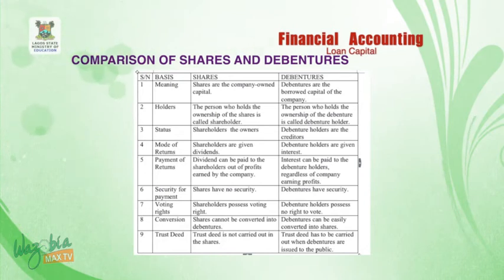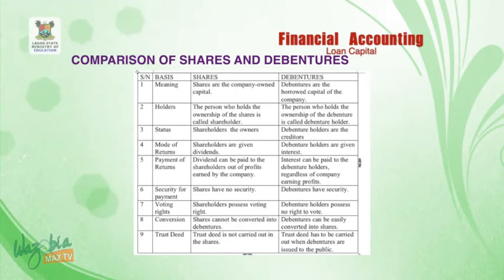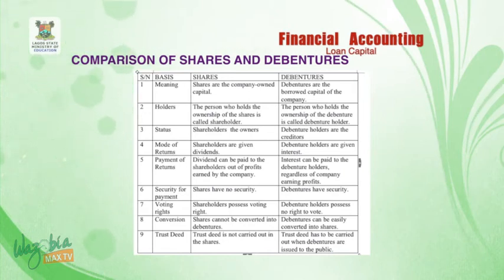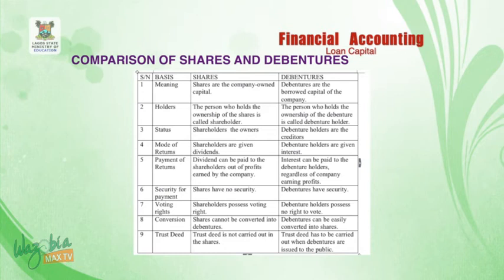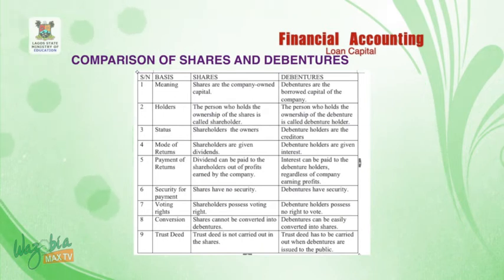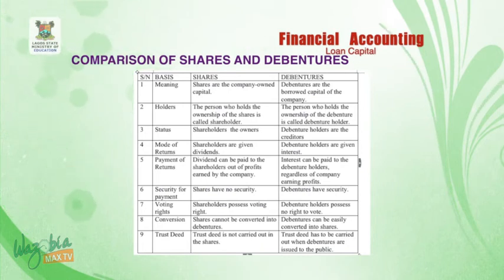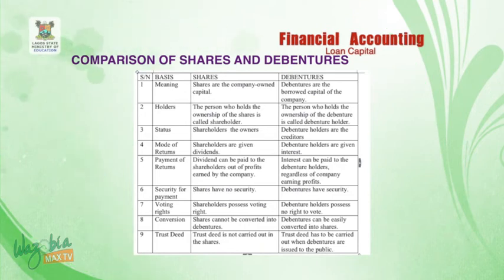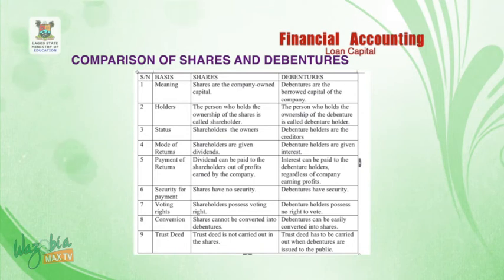We shall compare shares and debentures on nine bases. On the basis of meaning: shares are the company-owned capital, while debentures are the borrowed capital of the company. On the holder: a person holding shares is called a shareholder, while a person holding debentures is called a debenture holder. On status: shareholders are owners, while debenture holders are creditors. On mode of returns: shareholders receive dividends, while debenture holders receive interest. On payment of returns: dividends can only be paid out of profit, while interest is paid to debenture holders regardless of whether the company earns profit.